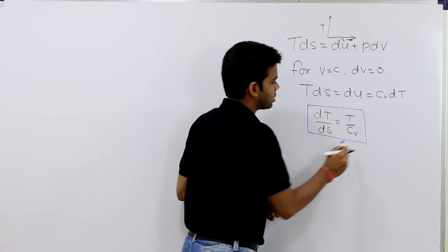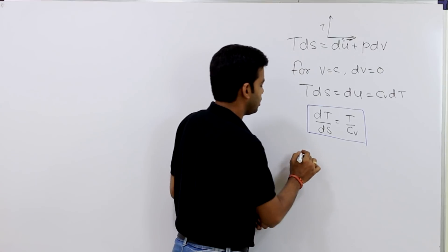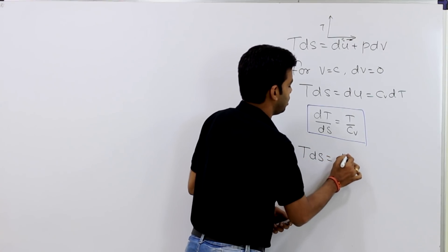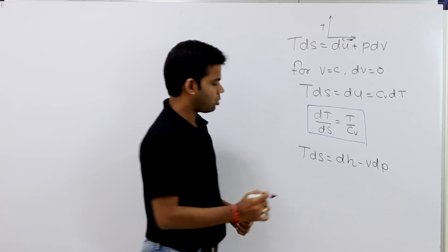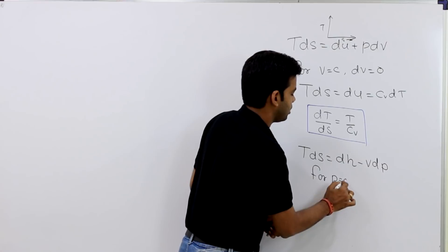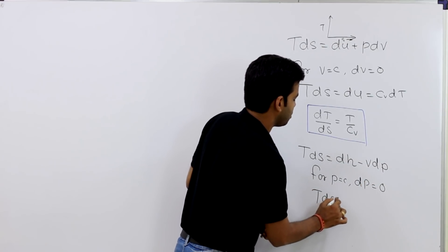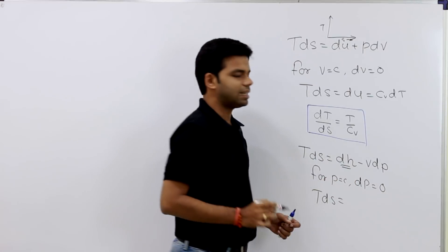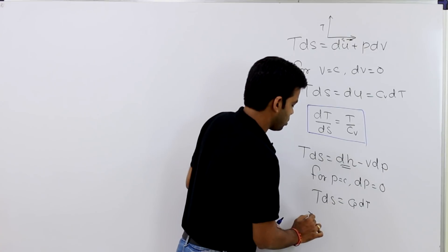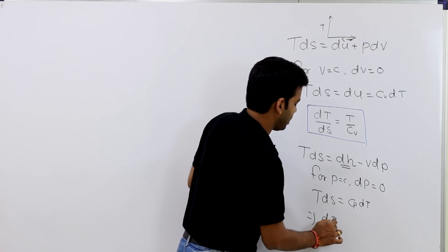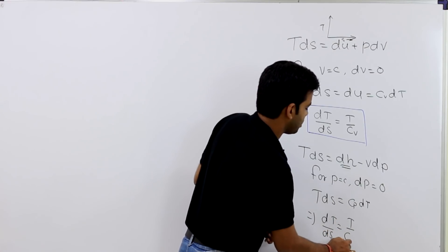Similarly, for the slope of the constant pressure curve on the TS diagram, we use another relation: Tds = dh − vdp. For a constant pressure process, dp = 0, so Tds = dh = Cp dT. Therefore, the slope dT/dS equals T/Cp.